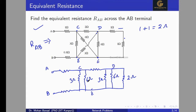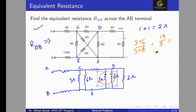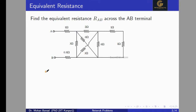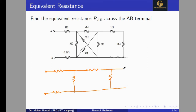Now we can simplify this circuit. We have two parallel resistors, 3 ohm and 6 ohm, between C and E, and the same combination from D to E. The equivalent resistance of 3 ohm parallel with 6 ohm is 3 × 6 divided by 3 + 6, which equals 18/9, or 2 ohm. So we redraw the circuit connecting C to E with 2 ohm, D to E with 2 ohm, and there is a 1 ohm resistor between B and E.